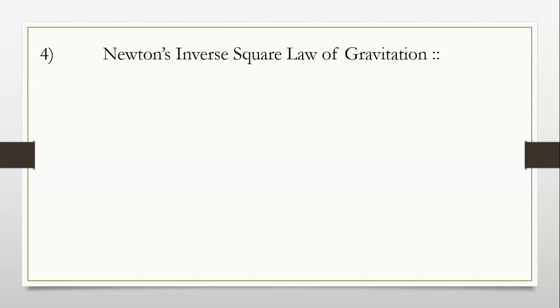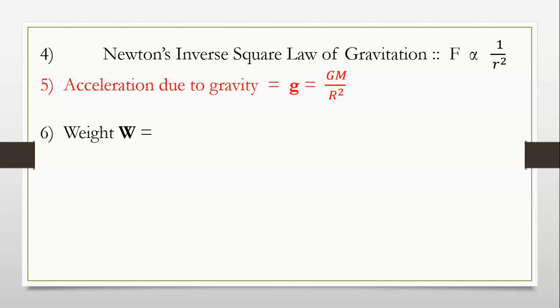Newton's inverse square law of gravitation: F inversely proportional to R square. Acceleration due to gravity g is equal to G into M upon R square. Weight W is equal to M into g.